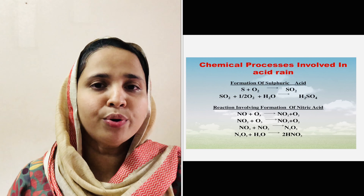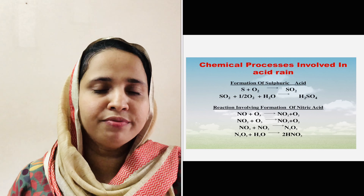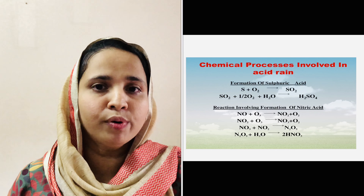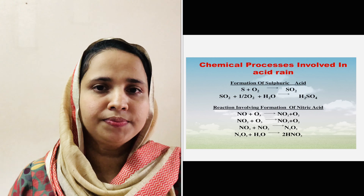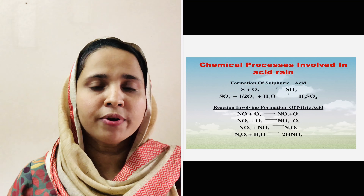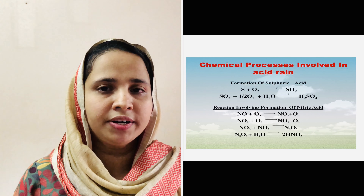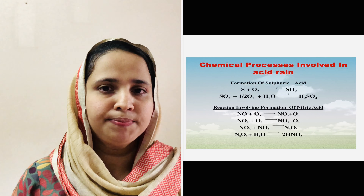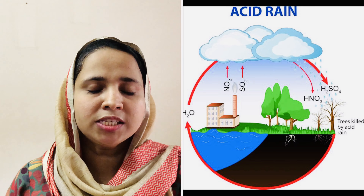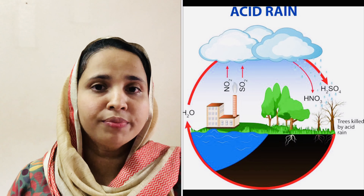Now we discuss the formation of sulfuric acid in the atmosphere. This occurs in a number of feasible ways — the process may be catalytic, where the catalyst may be heavy metal ions present in the atmosphere, or it may involve a number of radicals. The overall process may be represented as: sulfur dioxide reacts with oxygen and water to form sulfuric acid.